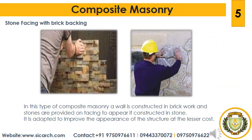The second type is stone facing with brick backing. In this type of composite masonry, a wall is constructed in brickwork and stones are provided on the facing to appear as if the wall is constructed entirely in stone. This is adopted to improve the appearance of the structure at a lesser cost.